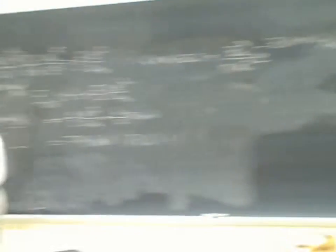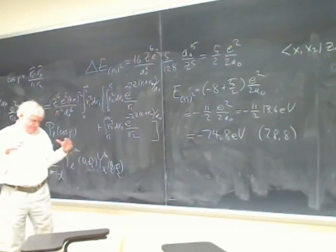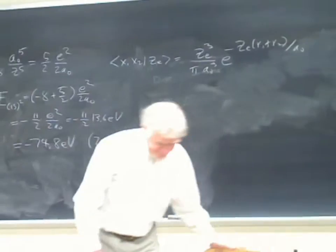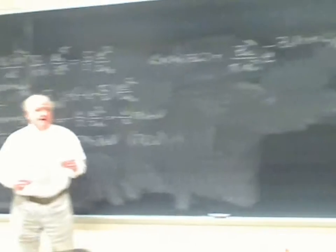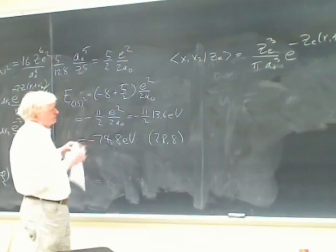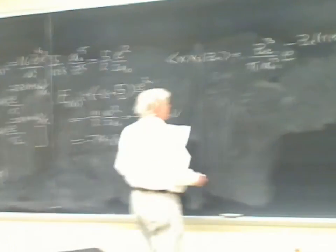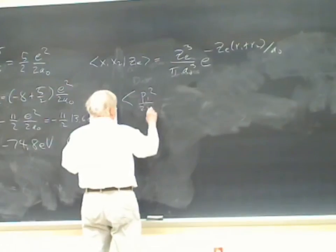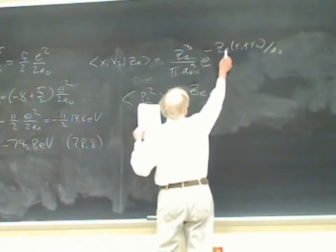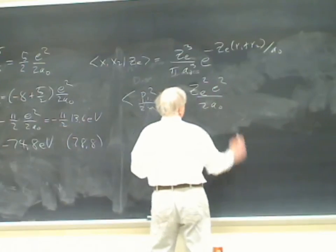Our variational trial wave function uses an effective charge Z_c, writing φ(x₁,x₂) ∝ e^{−Z_c(r₁+r₂)/a₀}. This allows you to mock up screening — one electron shielding the other from the nucleus. For p₁²/2m, the expectation value in this state is Z_c² e²/2a₀, and for −Ze²/r₁ it is −Z·Z_c e²/a₀.